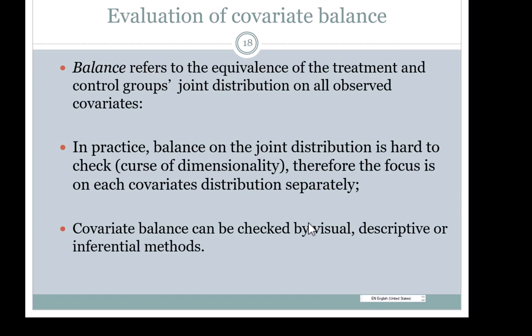Once you match, stratify, or weight, you evaluate the success of your efforts by looking at covariate balance. Covariate balance means checking the distributions of covariates for treatment and control groups. Technically it should be the joint distribution, but in practice we look at covariate balance variable by variable. It should not be done by inferential methods because covariate balance is a property of the sample, not a property of the population — so p-values are not applicable in this case, and doing a t-test is not meaningful when checking for covariate balance.